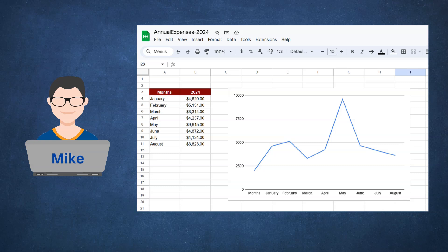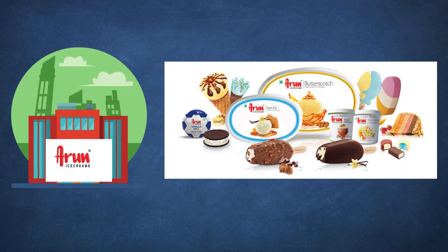Now let me explain how this works in the Oracle Fusion GL application. Let's imagine a company like Arun Ice Creams, a popular ice cream brand in India. They have way more expenses than Mike. Let's dive in and go through step by step to see how they can manage their finances using Oracle Fusion.